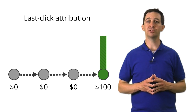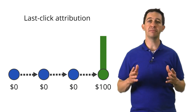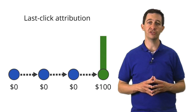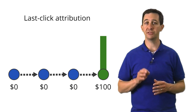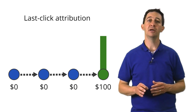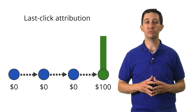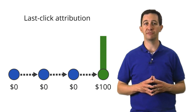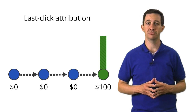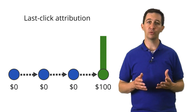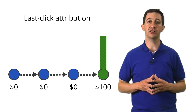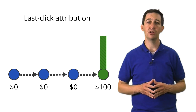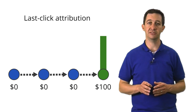We've used last click attribution for many years because it's the best measurement we've had, but we're now able to look at all of the marketing activities that helped generate each conversion. This is important because the reality is your customer will likely interact with you many times before a conversion occurs. How do we understand the value of those other marketing channels prior to conversion? We use the concept of an assist.